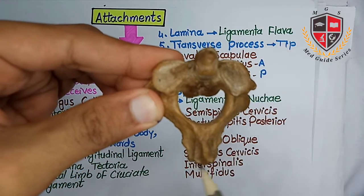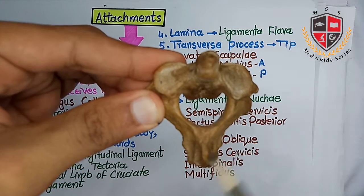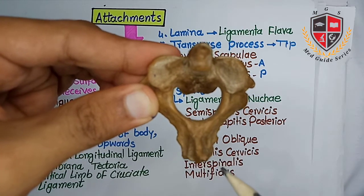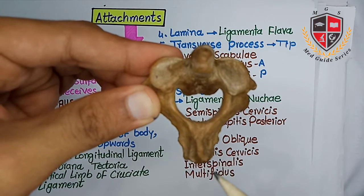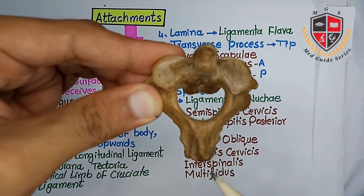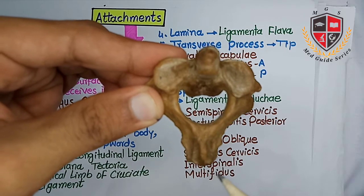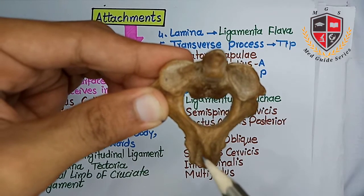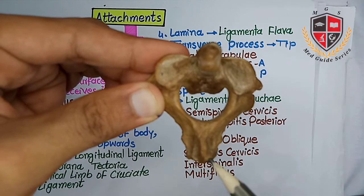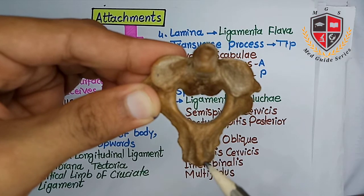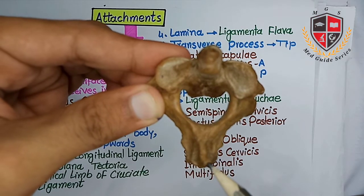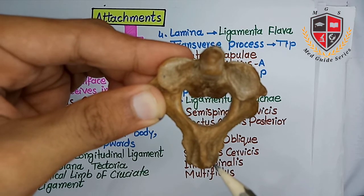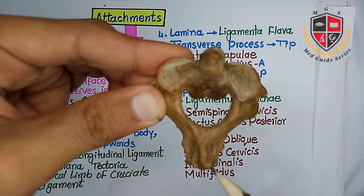The spine gives attachment to ligamentum nuchae, semispinalis cervicis muscle, rectus capitis posterior major, inferior oblique, spinalis cervicis muscle, interspinalis, and multifidus muscle.